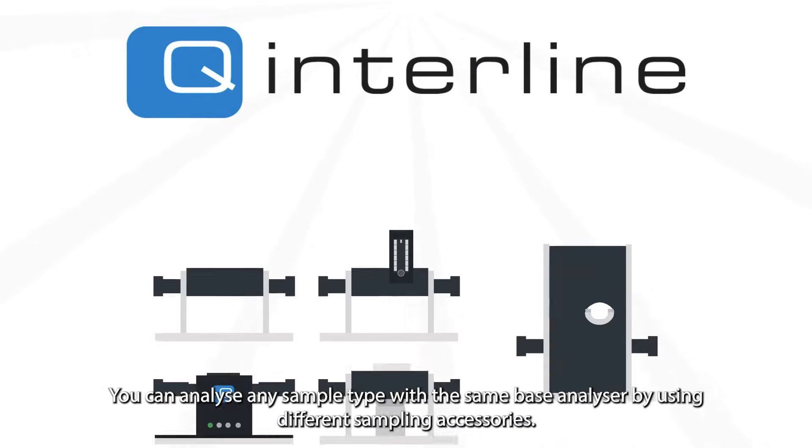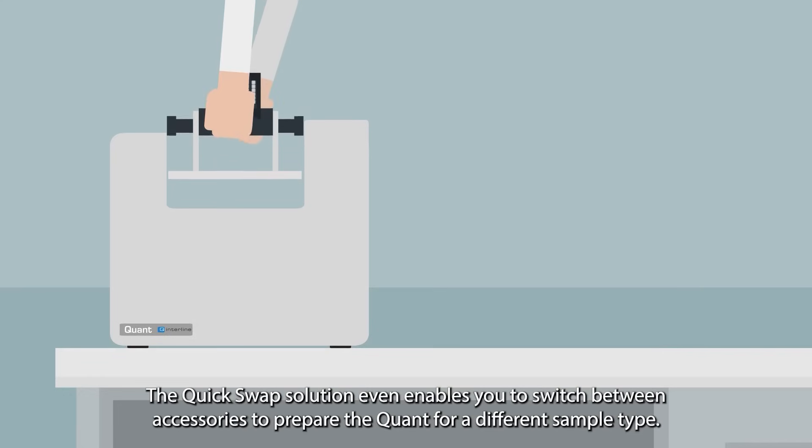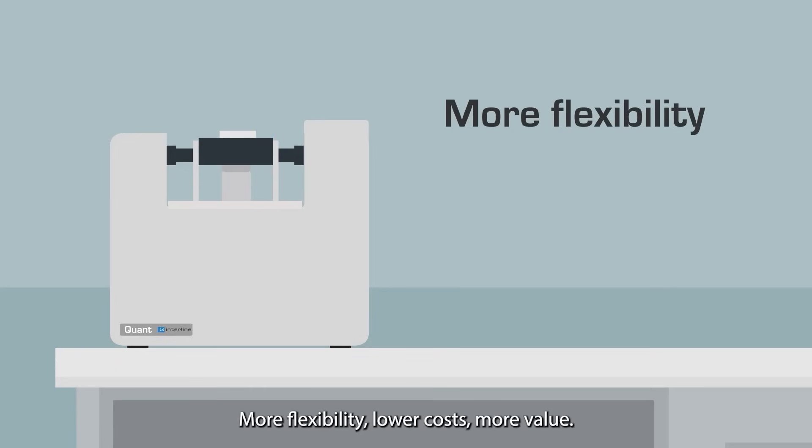You can analyze any sample type with the same base analyzer by using different sampling accessories. The QuickSwap solution even enables you to switch between accessories to prepare the Quant for a different sample type. More flexibility, lower costs, more value.